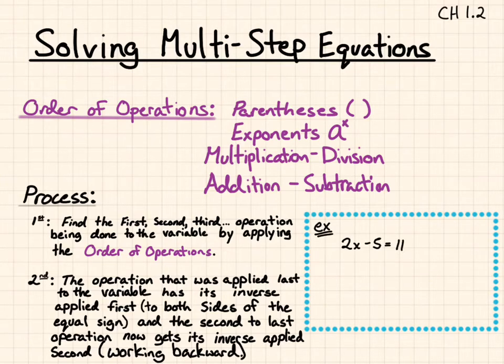So, for example, if I have 2x minus 5 equals 11, what is being done first? First, well, first x is being multiplied by 2.